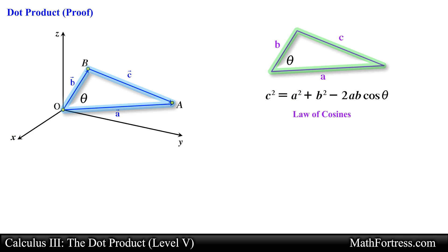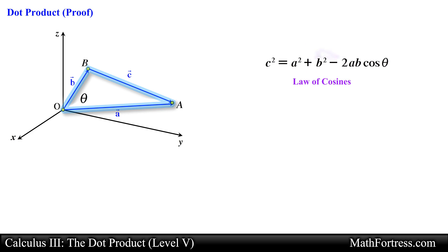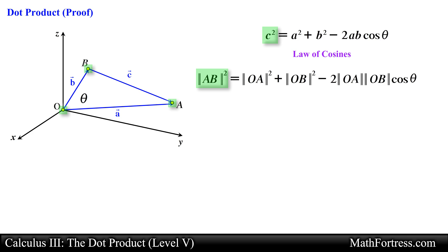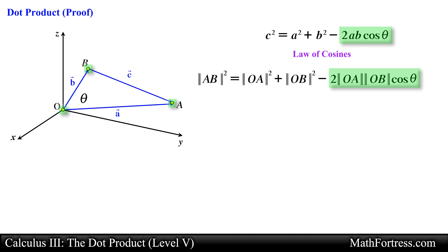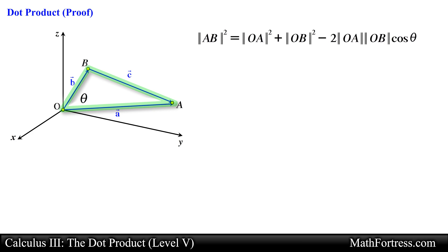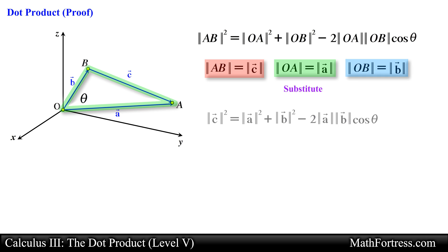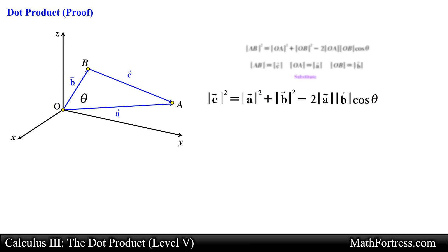Unfortunately our triangle is formed by vectors, but we can use the law of cosines to start our proof. We would first need to make a couple of adjustments. Let's use the vertices of the triangle to denote each of the line segments. By making this substitution our expression becomes: line segment AB squared equals line segment OA squared plus line segment OB squared minus two times the product of line segment OA and OB times cosine of theta. Next observe that the length of each line segment is the magnitude of vector A, B, and C, so we replace them with the respective magnitudes.